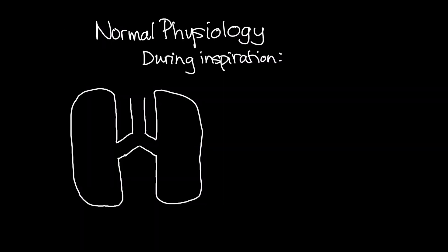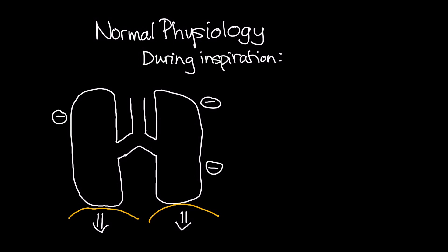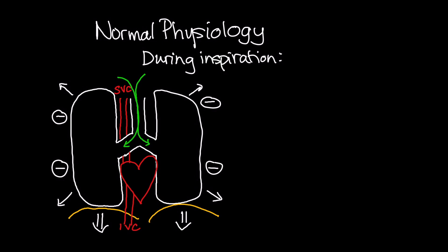Why does systolic blood pressure decrease on inspiration? When we inhale, the diaphragm moves downwards, creating a negative intrapleural pressure. This pulls the lungs open and causes air to move into the alveoli. Similarly, this negative intrapleural pressure also affects the heart and blood vessels. The negative pressure pulls open the blood vessels, drawing blood into the right ventricle, resulting in increased venous return.